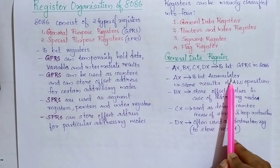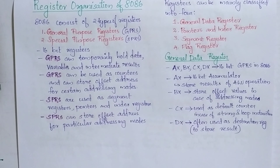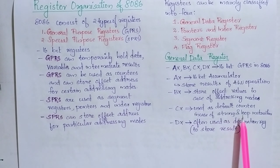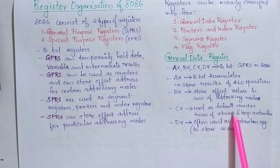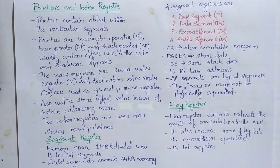AX is a 16-bit accumulator used to store the result of ALU operations. BX is used to store offset values in case of addressing modes. CX is used as the default counter in case of string and loop instructions. DX is often used as a destination register to store the result.